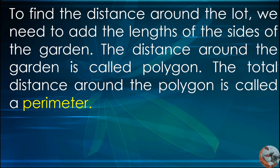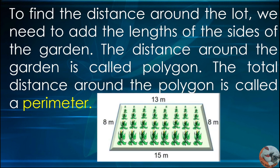To find the distance around the lot, we need to add the lengths of the sides of the garden. The distance around the garden is called polygon. The total distance around the polygon is called a perimeter.